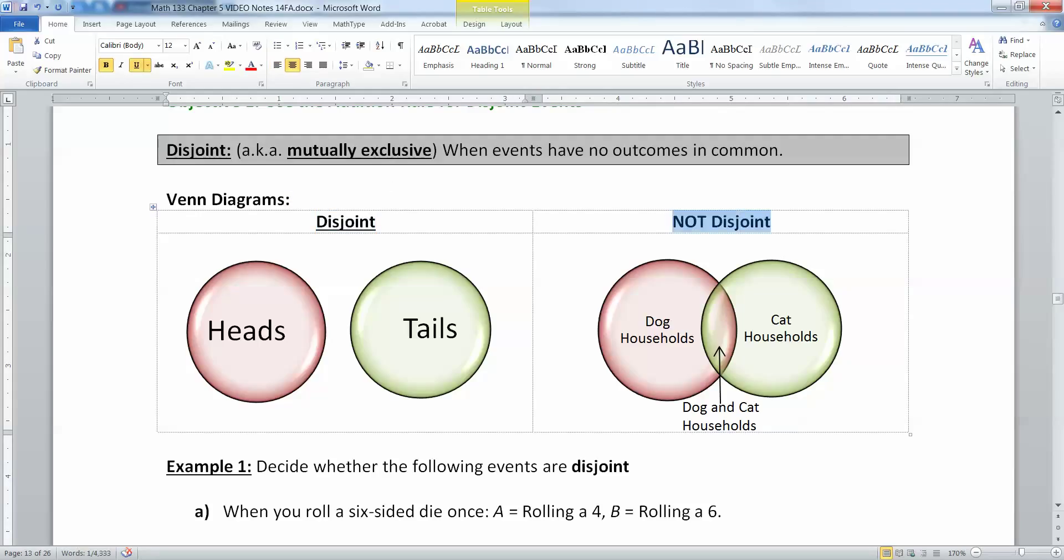What about not being disjoint? I was just petting my dog so it made me think of this. We have dog households over here, cat households over here, but we know that there's that very rare mix in between that has both dog and cats and they would be in the overlap. That's not disjoint because you can have somebody that has dogs and cats in their house.